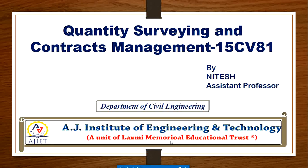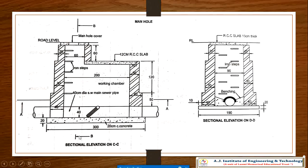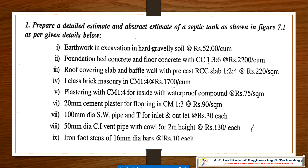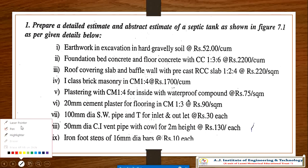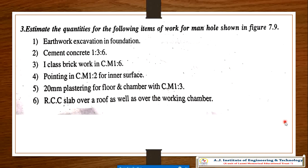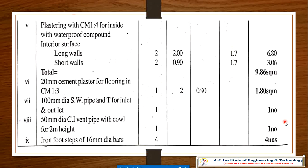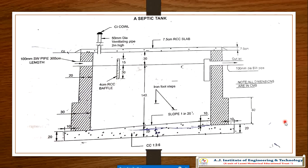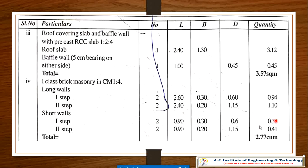Please recall the topics we covered in part 2. We will move on to the next slide. In part 2 we discussed the estimation of the septic tank as well as estimation of the manhole. In the last class we completed up to first class brick masonry — items 2.60 to 2.77 were discussed.